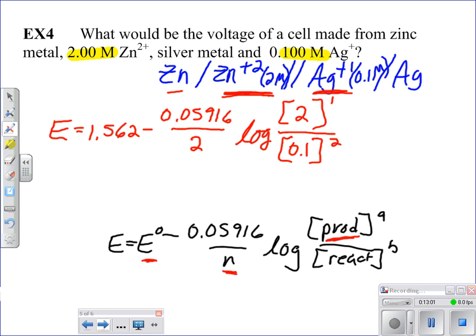So when I go through this math, and don't just stop there. Make sure you know how to plug this in. And that, I'm going to let you take time and do. So the answer that we end up getting here is 1.494 volts. That is the value of the voltage at non-standard conditions.